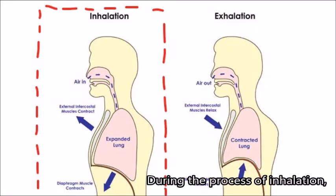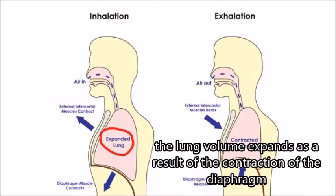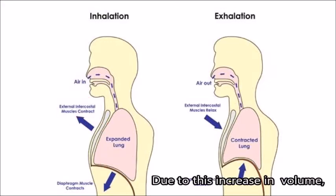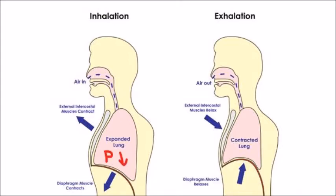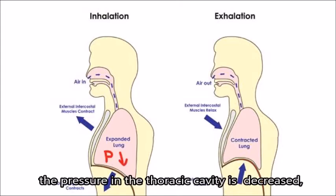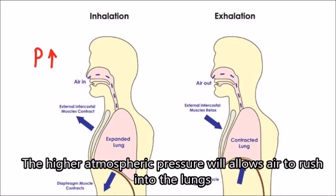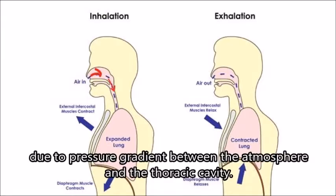During the process of inhalation, the lung volume expands as a result of the contraction of the diaphragm and intercostal muscles, thus expanding the thoracic cavity. Due to this increase in volume, the pressure in the thoracic cavity is decreased based on the principle of Boyle's Law.